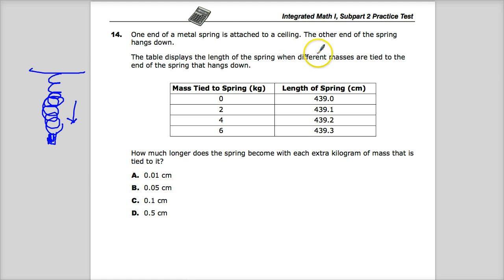The table displays the length of the spring when different masses are tied to the end of the spring that hanged down. How much longer does the spring become with each extra kilogram of mass that is tied to it? So what they're asking about really here is change. How much does it change? Specifically, what is the rate of change?